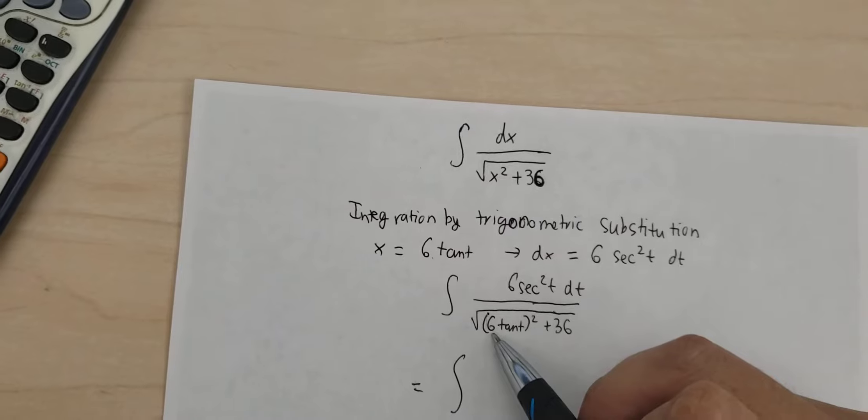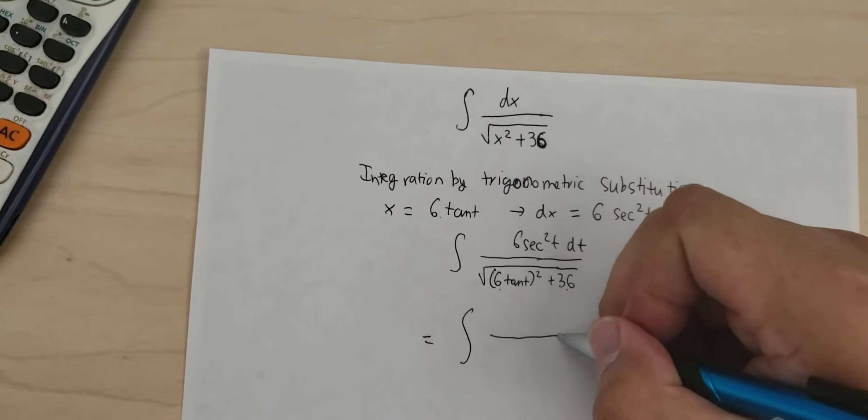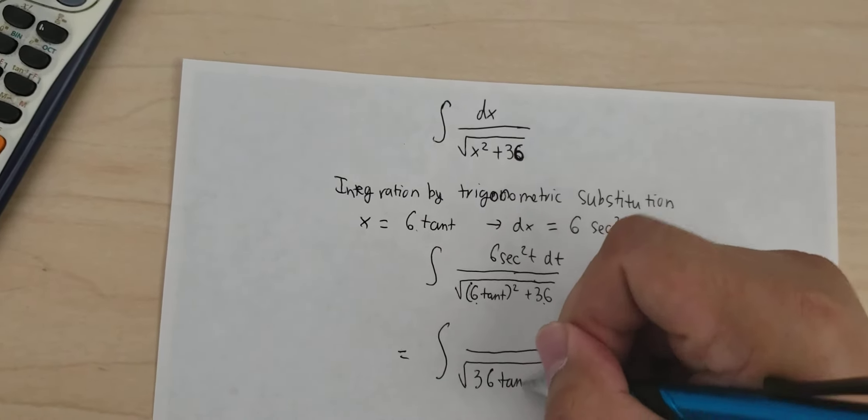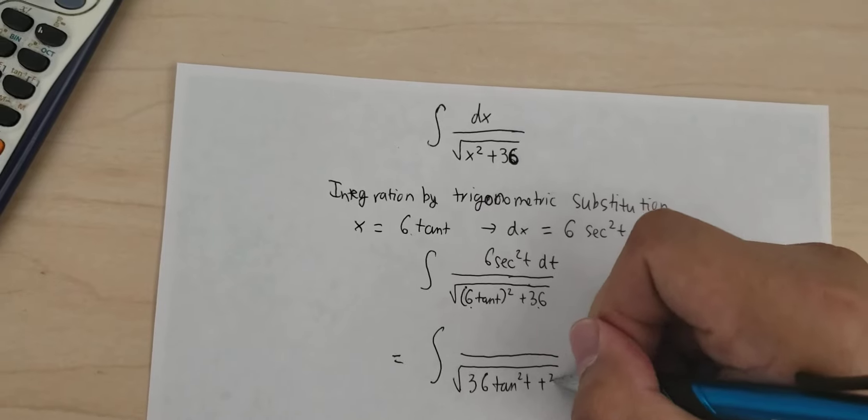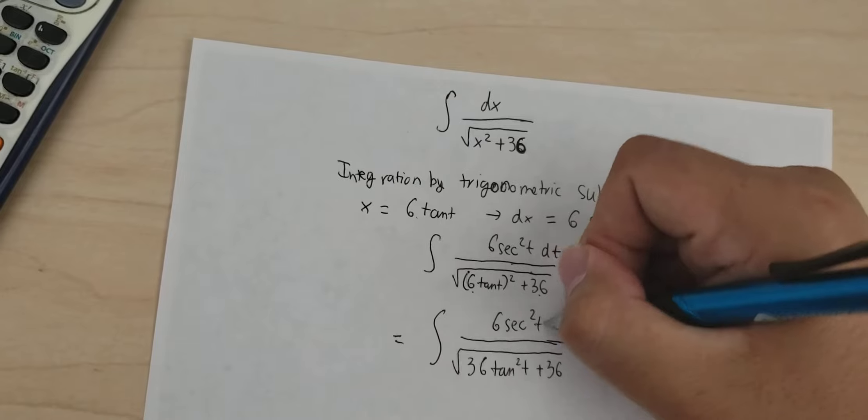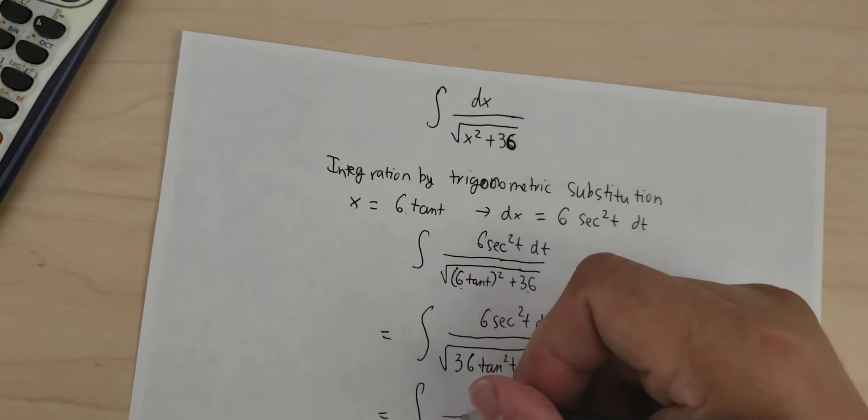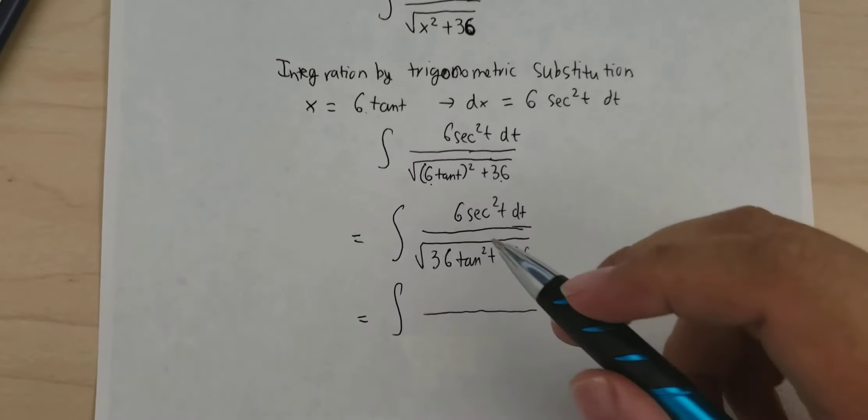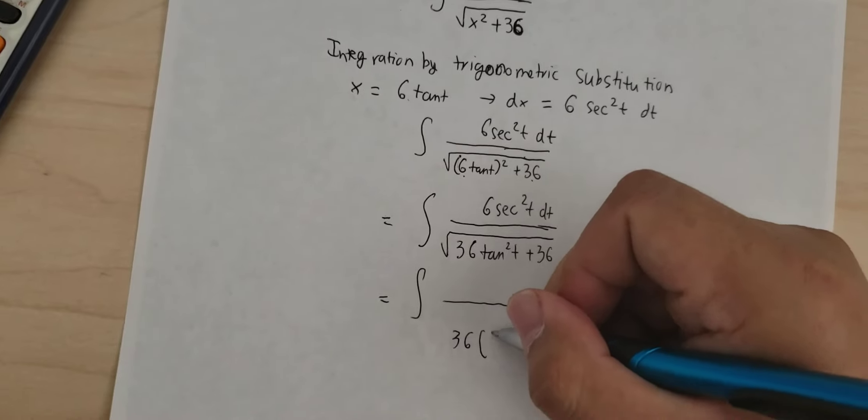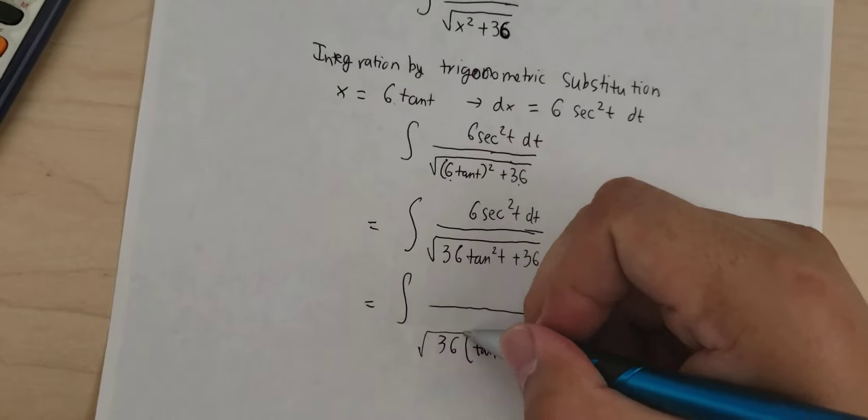Because we want to do factorization with 36. So we have 36, and we have tan squared t plus 1 under the square root.